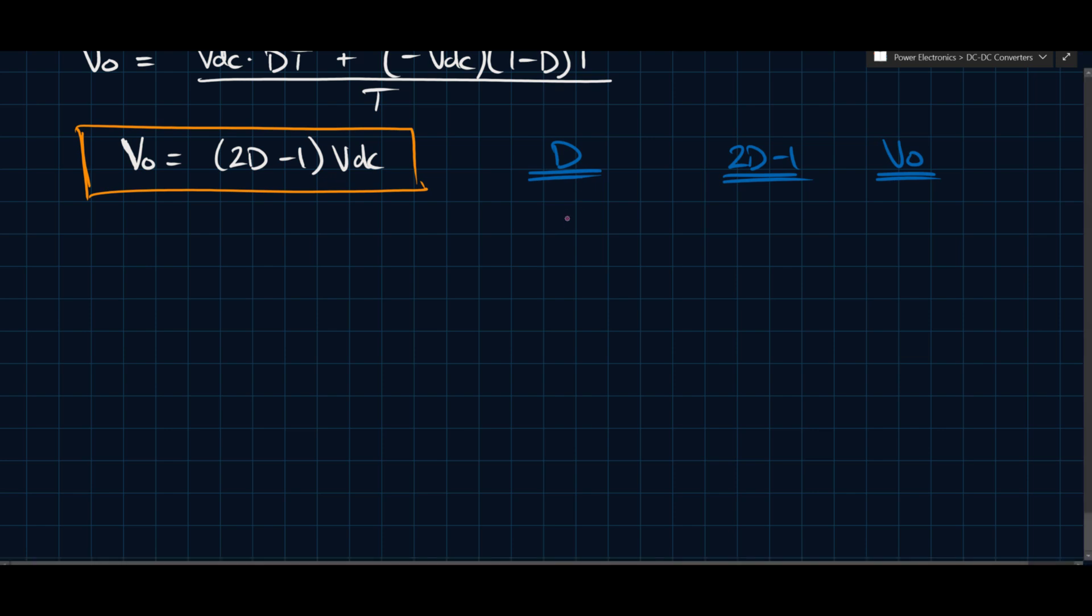So the case where D equals 1, 2D minus 1 is 2 times 1 minus 1, which is 1, and VO ends up being VDC.